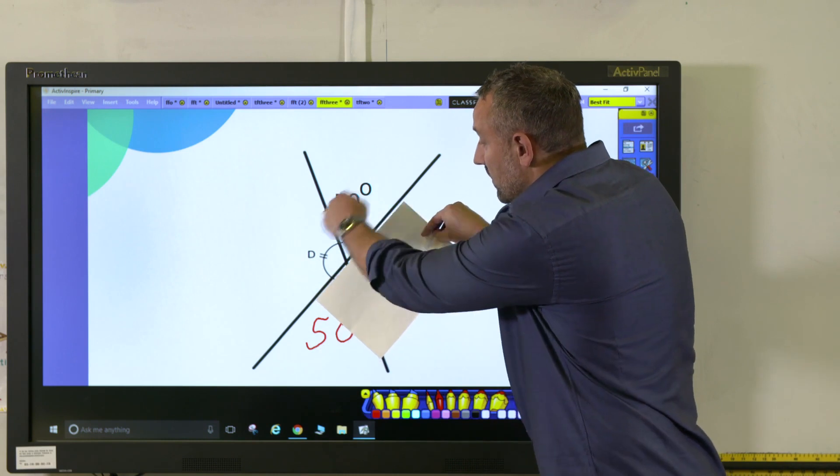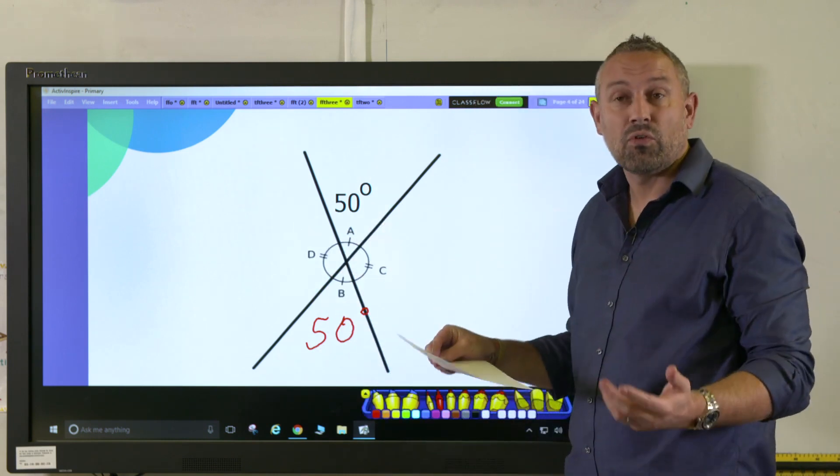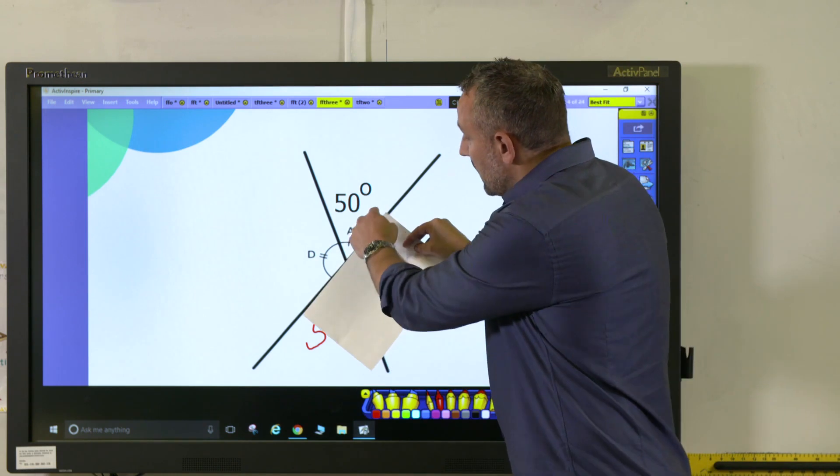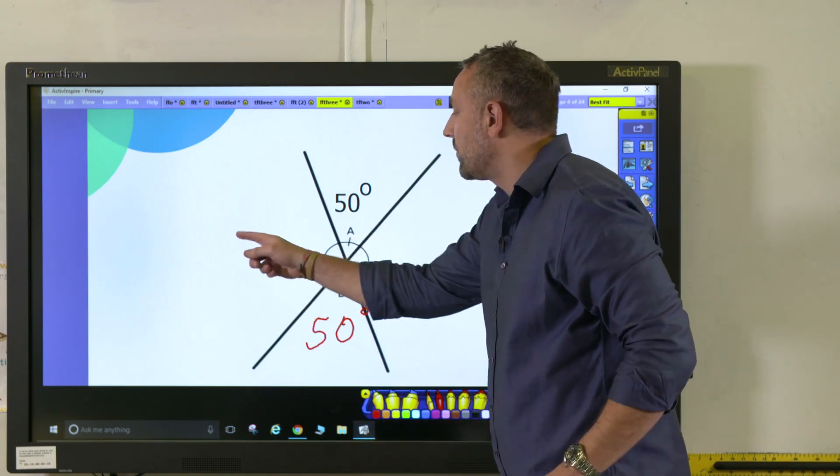Here another useful tip is to get a piece of paper and put it over, and the children can then see that that is a straight line and therefore 180 degrees. So if that is 50, this angle here will be 130.